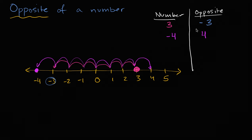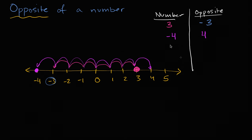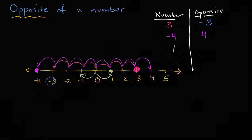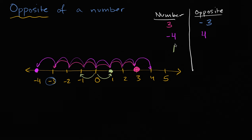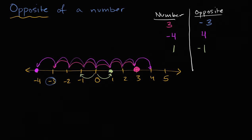So we'll do one last one. What is the opposite of one? Well, one is one to the right of zero, so its opposite is going to be one to the left of zero — negative one. Another way to think about it: one is positive, so its opposite is going to change the sign. Instead of being positive, it's going to be negative one. Either way you can think about it.